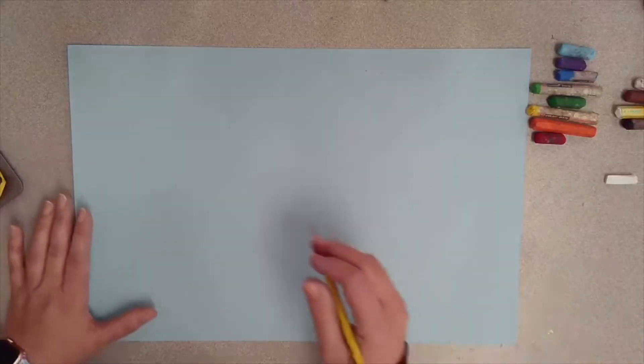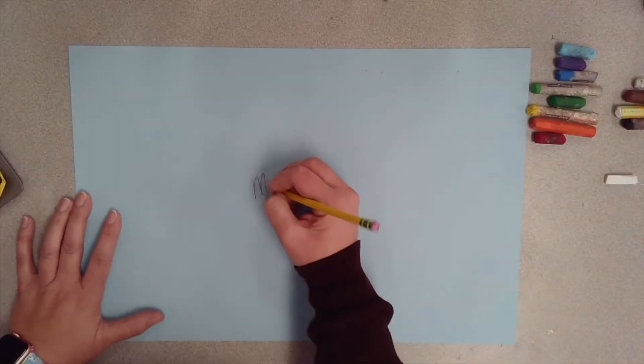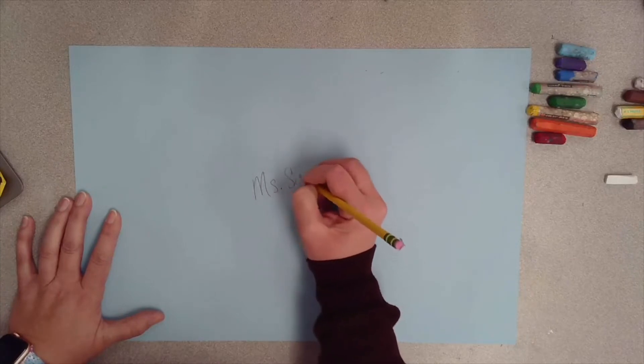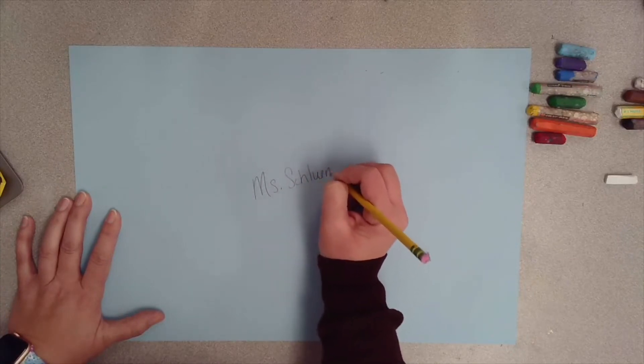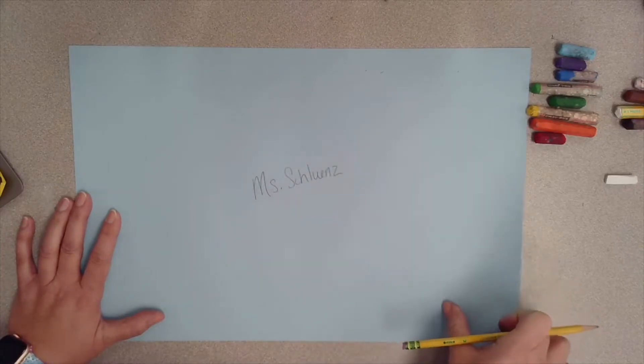Today we're going to draw a landscape picture in the style of Grandma Moses. First thing you're going to do is write your name on the back of your paper and your class.